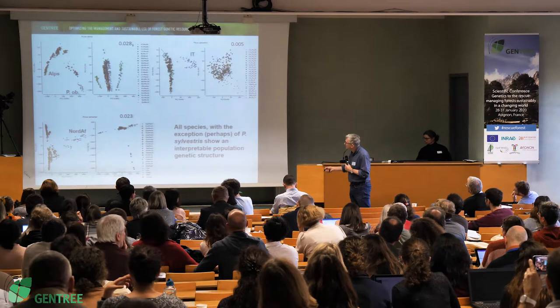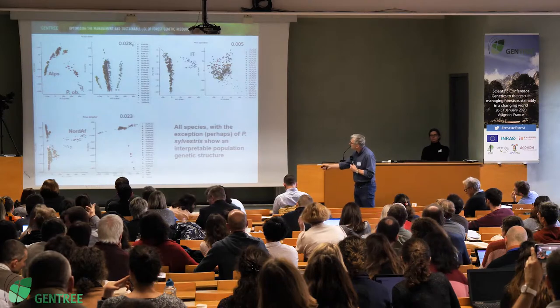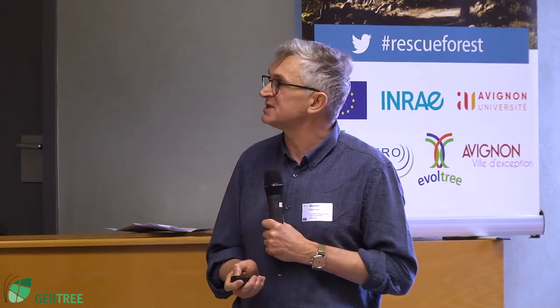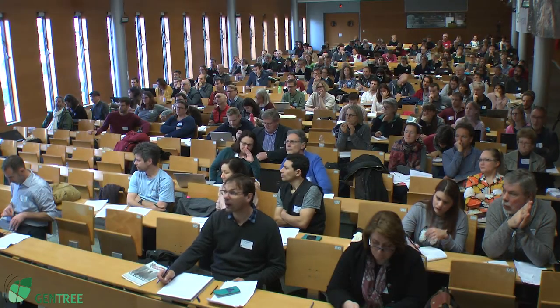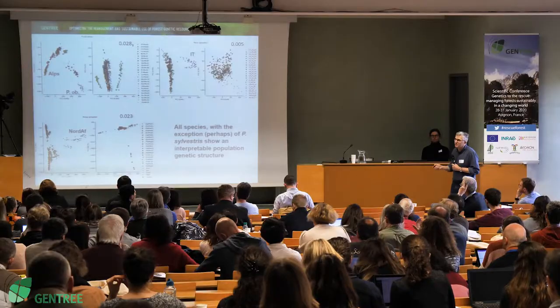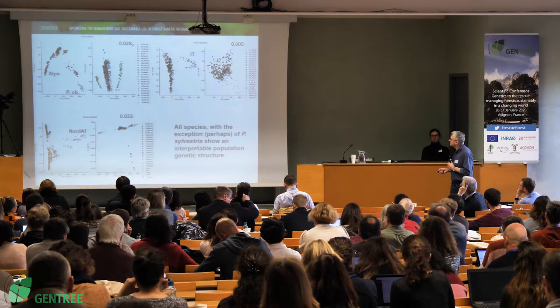Maritime pine shows North Africa separating from the rest. So all species, with the possible exception of Pinus sylvestris, show an interpretable population genetic structure. Thinking about humans and the type of genetic maps we can make there, this is not a surprise — with this data, you will find structure.